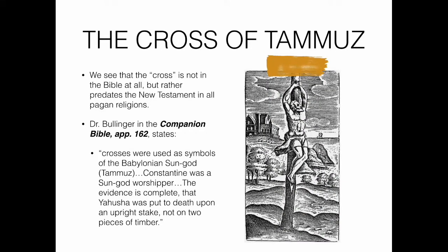The cross is not in the Bible at all, but rather predates the New Testament in all pagan religions. Dr. Bullinger in the Companion Bible states: crosses were used as symbols of the Babylonian sun god Tammuz. Constantine was a sun god worshiper. The evidence is complete that Yahusha was put to death upon an upright stake, not on two pieces of timber.